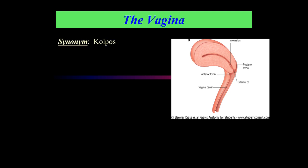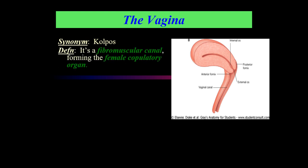The synonym for vagina is 'colpus' — colpus means vagina, so all related terms will start with colpus. The vagina is a very important female copulatory organ and it is a fibromuscular canal. It is the main organ of copulation and also the route of passage for the birth of the fetus during normal delivery.